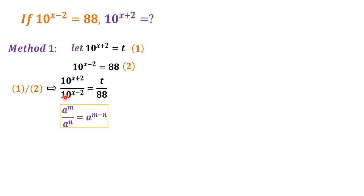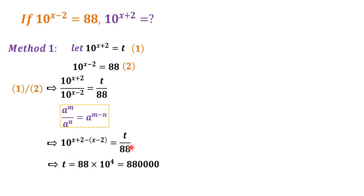The base is 10 here, and we get the subtraction of the powers. We have 10 to the power of x plus 2 minus (x minus 2) is equal to t over 88. Then we arrange to get t is equal to 88 times 10 to the power of x plus 2 minus x minus 2, that is 10 to the power of 4, giving t equal to 880,000.